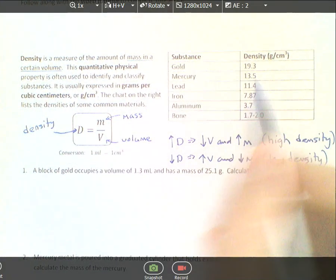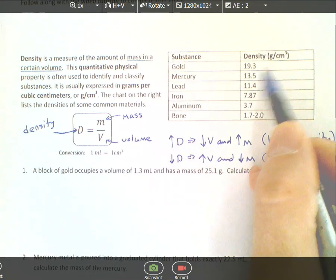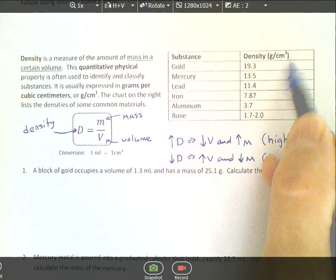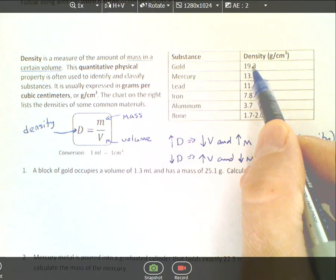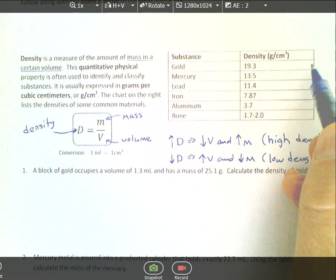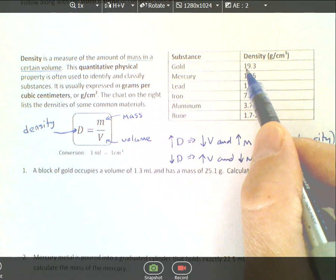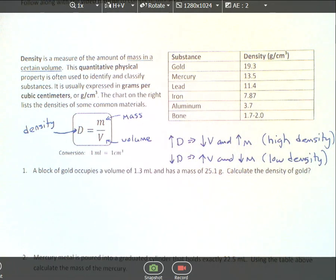This table shows some common substances and the amount of mass per unit volume. Gold has about 19.3 grams for every cubic centimeter. If you had a little cube one centimeter by one centimeter by one centimeter, or one milliliter in volume, you would have 19.3 grams of gold.